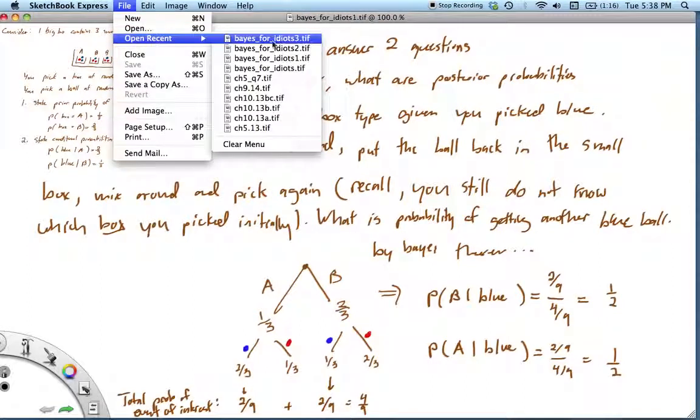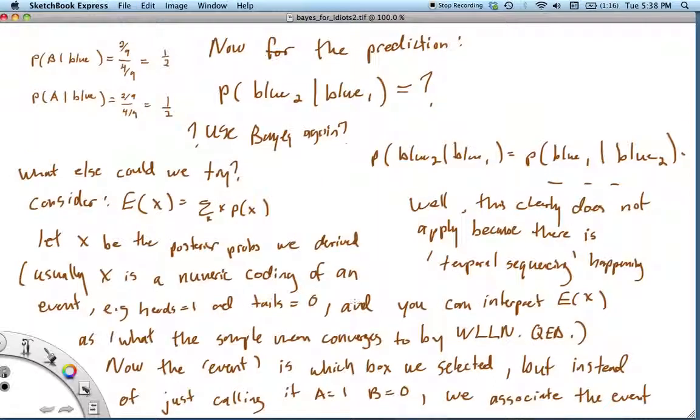This shows how your posterior distribution is a shifting of your prior to different proportions. I know you're like, I know all this, duh, there was one specific thing I asked you, and now you've been talking for five minutes. This is what you want to know about. The prediction. What's the probability of drawing a second blue given that you drew blue on the first go?